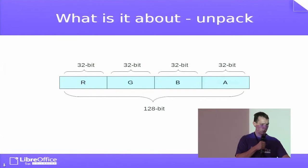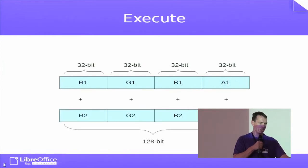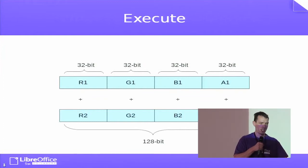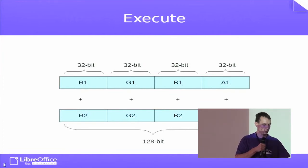32 bits is fixed. You can use either floating point or integer depending on what you need. SSE only supports floating point; SSE2 also supports integer.